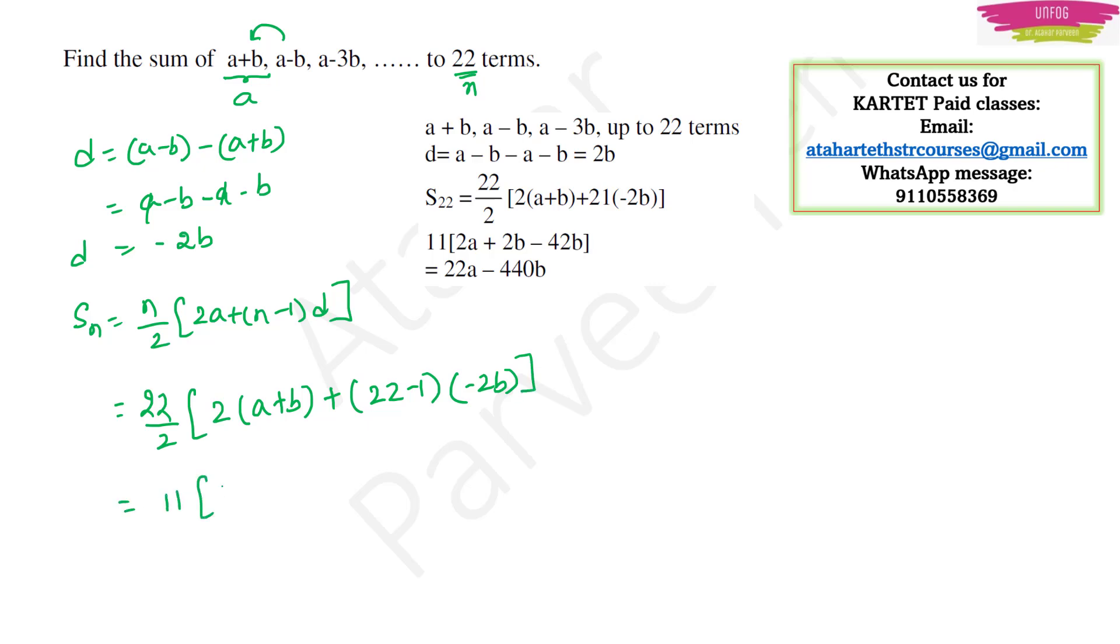So this will be 11 into 2 into a plus b plus 21 into minus 2b. So this will be equal to 11 into 2a plus 2b minus 42b. So this should be equal to 11 into 2a minus 40b,